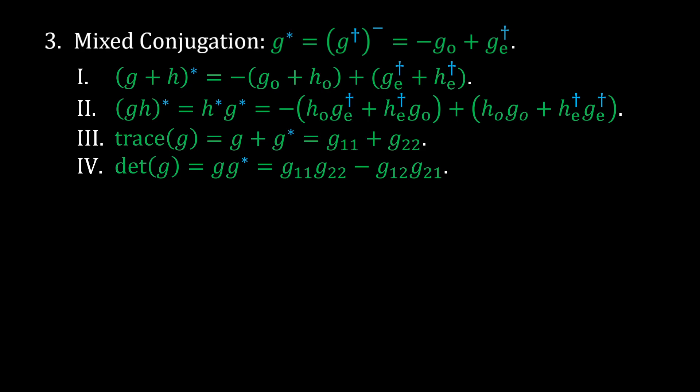Remember from linear algebra that the trace is the sum of the diagonals, and for 2x2 matrices, the determinant is the product of the main diagonal minus the product of the cross diagonal.